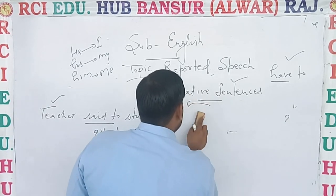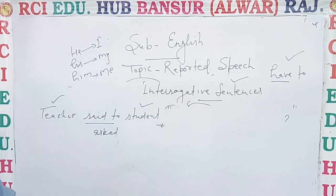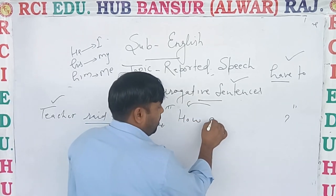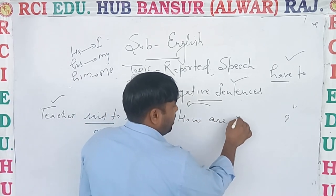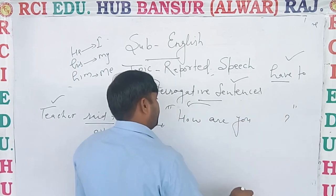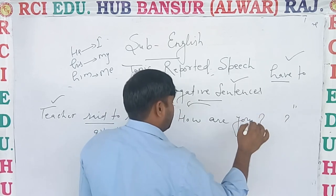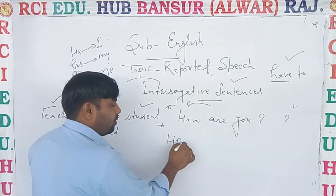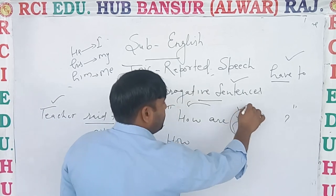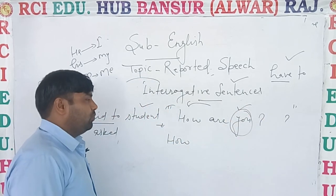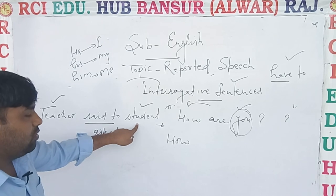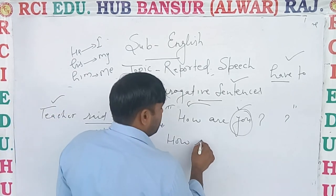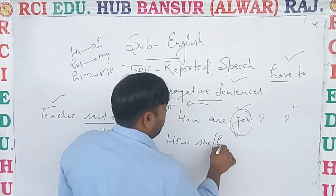In the same way, one more example: 'How are you?' Then 'how' will be 'how'. Firstly we will use 'you' according to the student, then 'she' or 'he'.